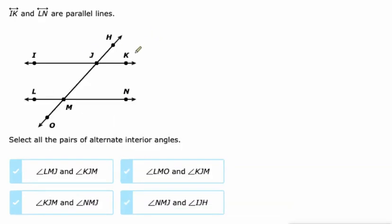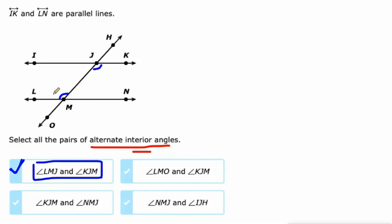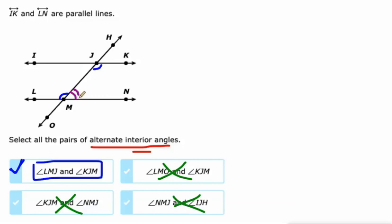And we'll finish with alternate interior angles. LMJ — that's an interior angle, inside the parallel lines. KJM — yep, that one's congruent to it and also inside the parallel lines. One's to the left of the transversal, one's to the right, so it's the alternate part. LMO — that's exterior, so I'm not going to bother with that one. NMJ — that's a same side interior, so no. IJH — that's exterior, so no. There is one other pair: NMJ along with IJL would be alternate interior as well, but that one's not listed.